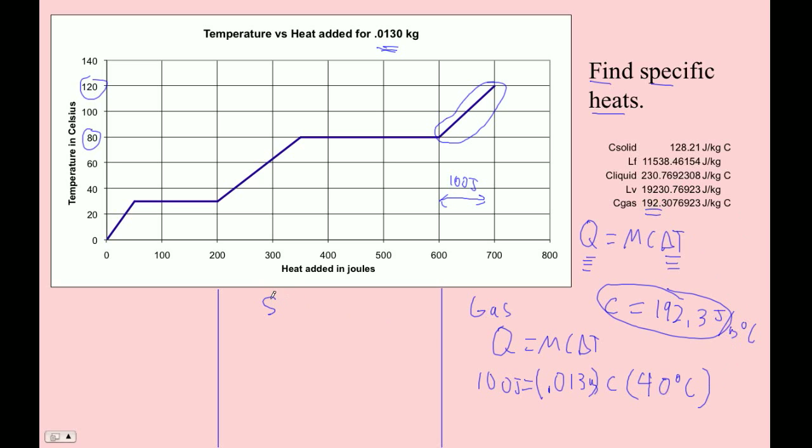Okay, so now let's do the liquid. The liquid is here. It's that line segment right there. Whoops, I can't circle things. Okay, so we're going to use Q as mcΔT. Our Q is, let's see, 100, 150, I think is what that is there.